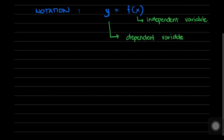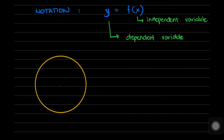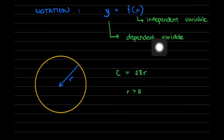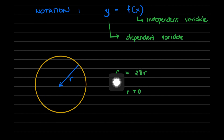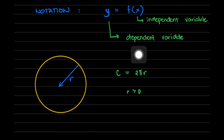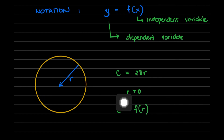Say for example we are given a circle with radius r. The circumference of the circle is equal to 2πr. For every value of r, provided that r is greater than 0, there is a corresponding value of the circumference. So the value of the circumference is dependent on the radius. That's why c is the dependent variable and r is the independent variable. In this relationship, c is a function of r, provided that r is greater than 0.